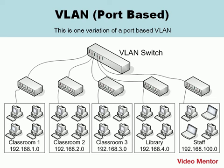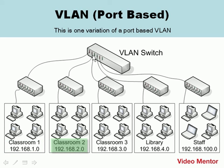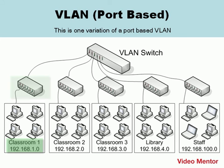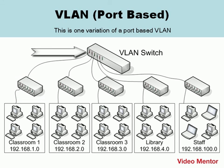Here's one variation of a port-based VLAN. You could install a VLAN-ready switch and assign a different network number for each port — for example, port 1 would be 192.168.1.0, port 2 would be 192.168.2.0, and so on. Then connect a separate hub or switch to each of those ports, creating a hierarchical star topology. Cables must be connected to their corresponding hub and room — for instance, cables from Classroom 1 connect to the Classroom 1 hub, which connects to the 192.168.1 port on the VLAN switch.